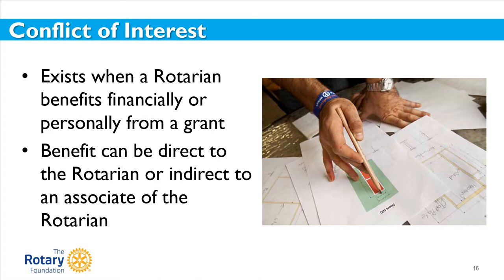When Rotarians freely disclose any direct or indirect association with a grant project, they help to ensure a fair process and transparency in the use of funds. Rotarians must disclose any conflict of interest on a grant application. If Rotarians aren't sure whether a situation is a conflict of interest, they should talk with their grant officers. An actual or perceived conflict of interest does not necessarily disqualify a Rotarian from participating in a Rotary grant, and eligibility for participation will be determined case by case.